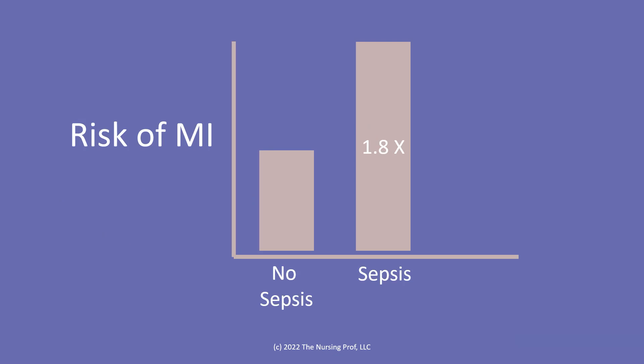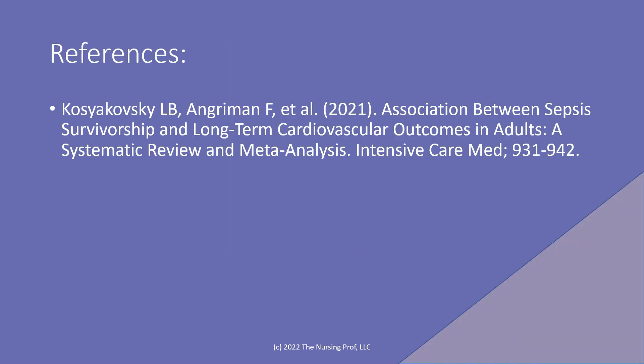In a study done by Kazakowski and colleagues, they found that the risk of MI was almost doubled — 1.8 times — when the patient had sepsis versus not having sepsis. The risk of heart failure was 1.7 times as great when the patient had sepsis. So clearly, sepsis is causing some dysfunction of the heart in these patients. The reference is: 'The association between sepsis survivorship and long-term cardiovascular outcomes in adults: a systematic review and meta-analysis.'